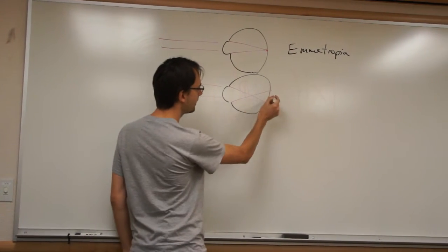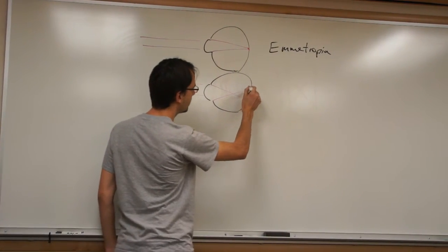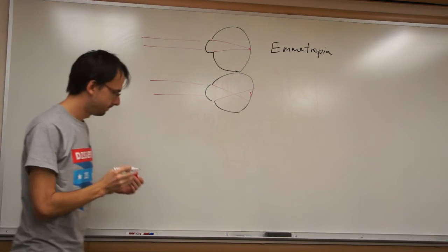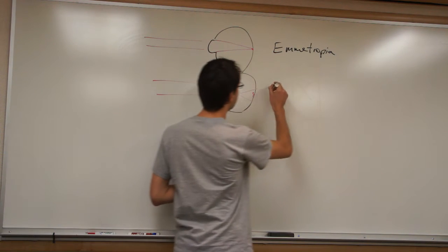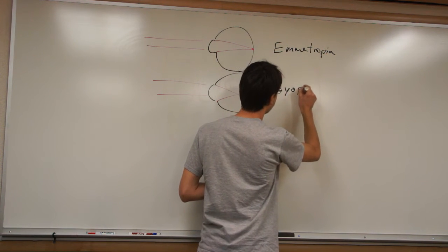Okay? And so by the time you get back out here to the retina, everything is blurry. Right? And this is what's called nearsightedness, and the technical term is myopia.